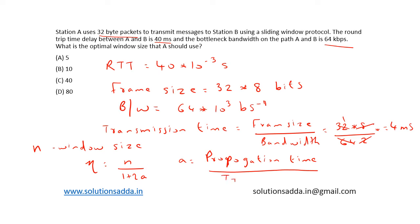Let's denote transmission time as Tt. So we have eta is equal to N by 1 plus 40 by 4. Solving we will get N is equal to 11.